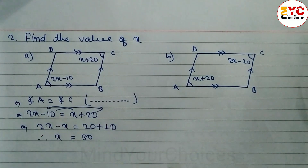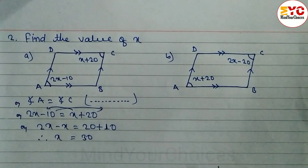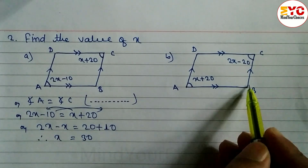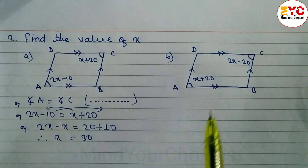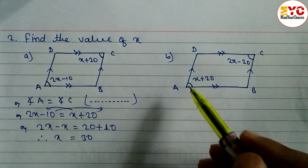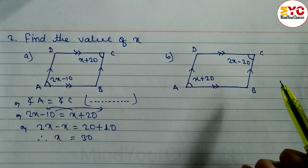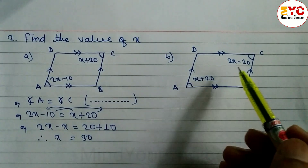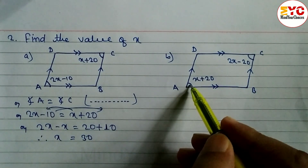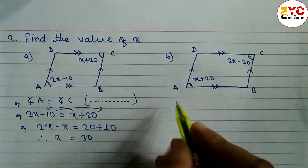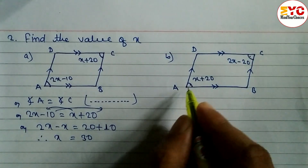Therefore the value of x is equal to 30. Hope you understand question number a. Now look at question number b. You can see here ABCD is a parallelogram. A parallelogram means opposite sides are equal and opposite angles are equal. Here in this question angles are given.